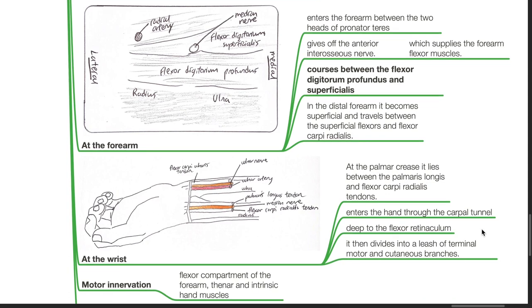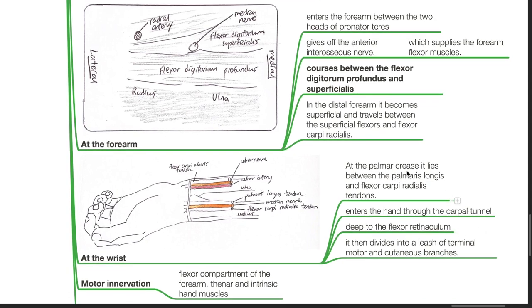At the wrist, at the palmar crease, it lies between the palmaris longus and flexor carpi radialis tendons and enters the hand through the carpal tunnel, deep to the flexor retinaculum, and it then divides into a leash of terminal motor and cutaneous branches.